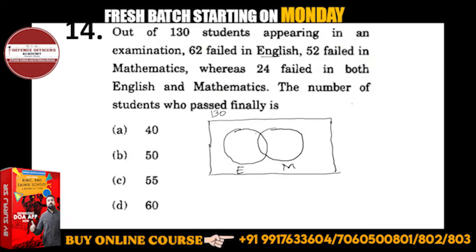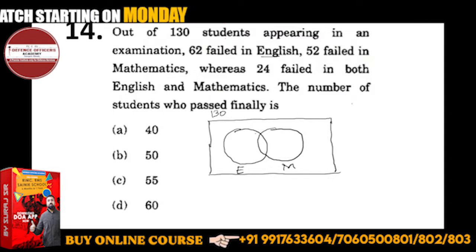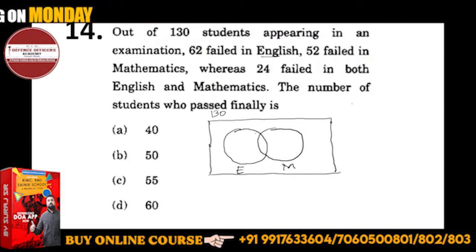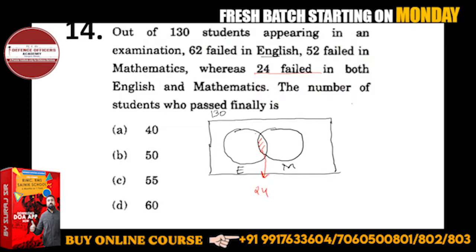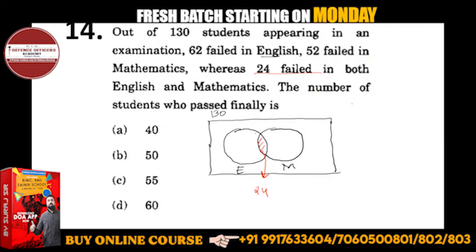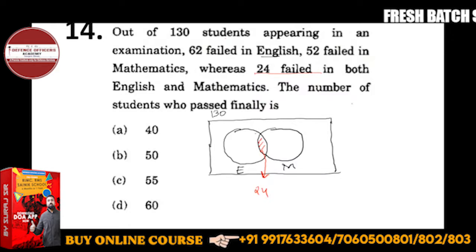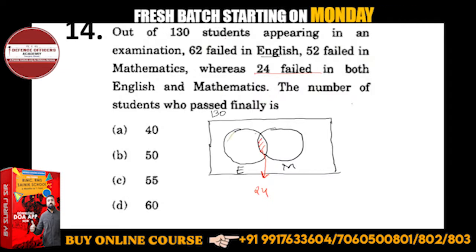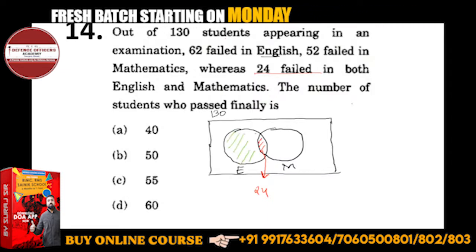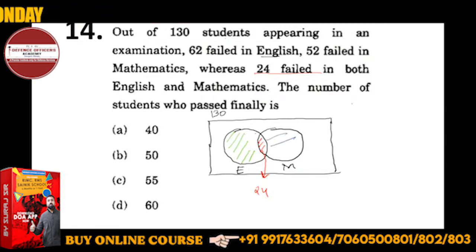There are 62 who failed in English. The common portion - the intersection - is 24, because 24 failed in both. I will show you three portions: only English in green, the common portion of 24 in red, and the only-Mathematics portion separately.